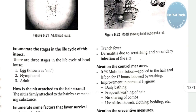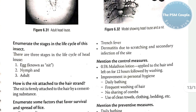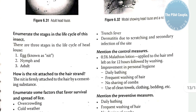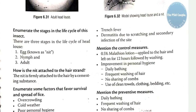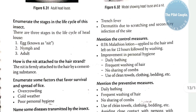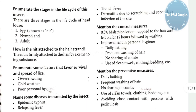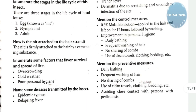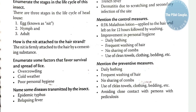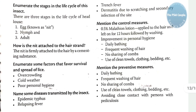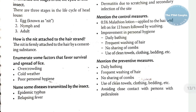Stages in the life cycle of the head louse are: the egg, which is known as the nit, the nymph, and the adult. The nit is firmly attached to the hair strand by a cementing substance.